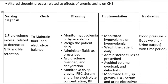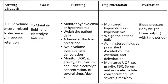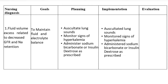Nursing Diagnosis 1: Fluid volume excess related to decreased GFR and Na+ retention. Goal: To maintain fluid and electrolyte balance. Planning: Monitor for hypovolemia or hypervolemia. Weigh the patient daily. Administer fluids as prescribed. Avoid volume overload and dehydration. Monitor urine output, FBC, serum and urine electrolyte concentration, blood pressure several times per day. Auscultate lung sounds.